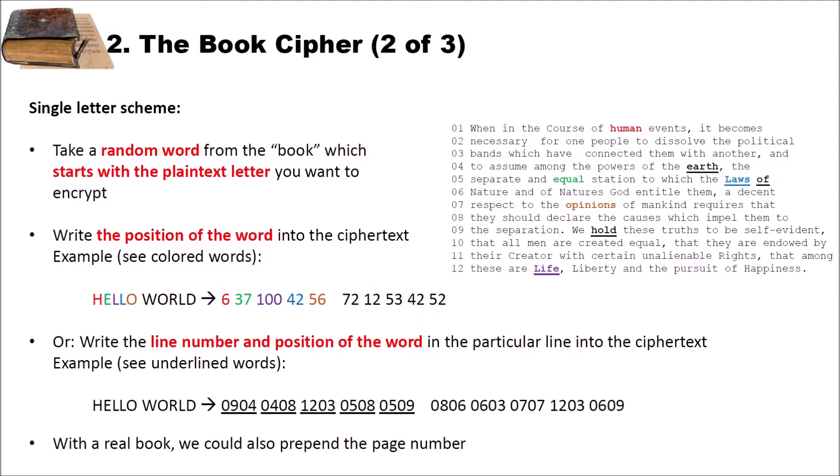At first the single letter scheme. Here on the right side I have a text document. And we will use this text document as a key. You can see that I added the line numbers on the left side of the text document. To encrypt letters, we first take a random word from the book which starts with the plaintext letter that we want to encrypt. And then we write down the position of the word into the ciphertext. For example, as we did here, we want to encrypt the text hello world.